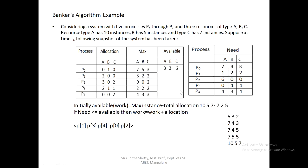Now the pending processes are P0 and P2. Going back to P0: need of P0 is 7,4,3. Is 7,4,3 ≤ 7,4,5? Yes — 7≤7, 4≤4, 3≤5. So update work = 7,4,5 + allocation of P0 (0,1,0) = 7,5,5. Now check P2: need is 6,0,0. Is 6,0,0 ≤ 7,5,5? Yes. Update work = 7,5,5 + allocation of P2 (3,0,2) = 10,5,7.